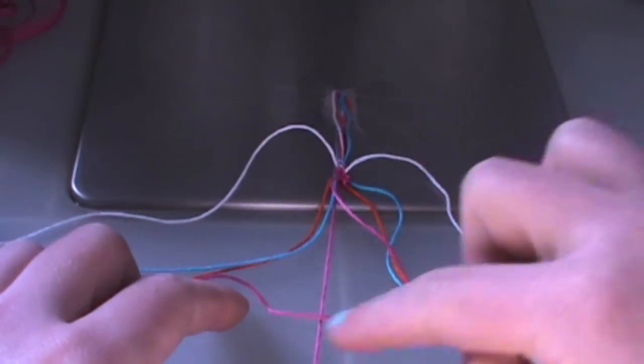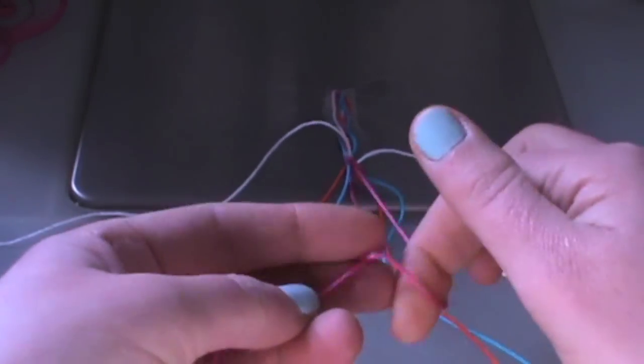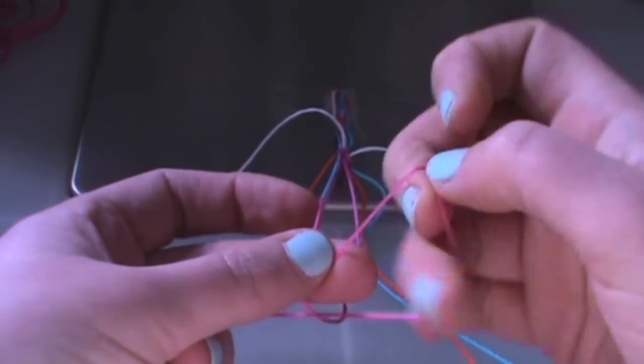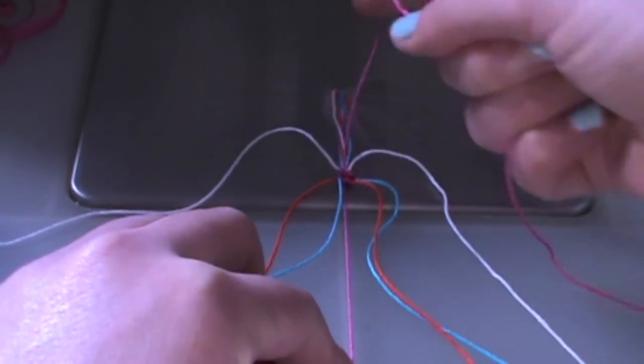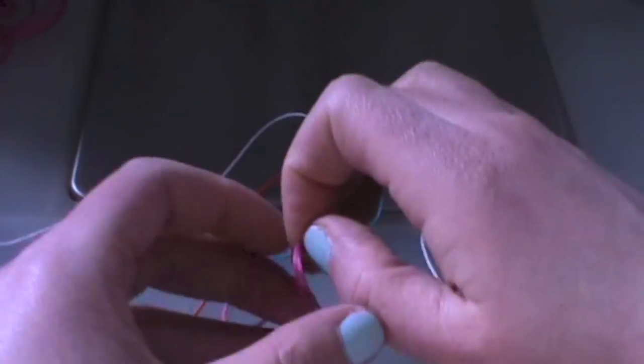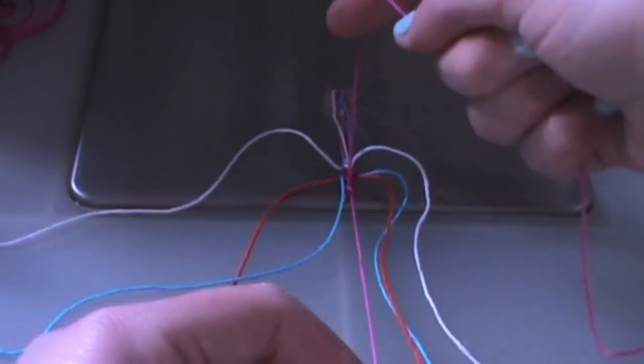First we're going to do the back to front four, pull that through, make a knot. And then we're going to make a regular four shape, pull that through, pull it tight.